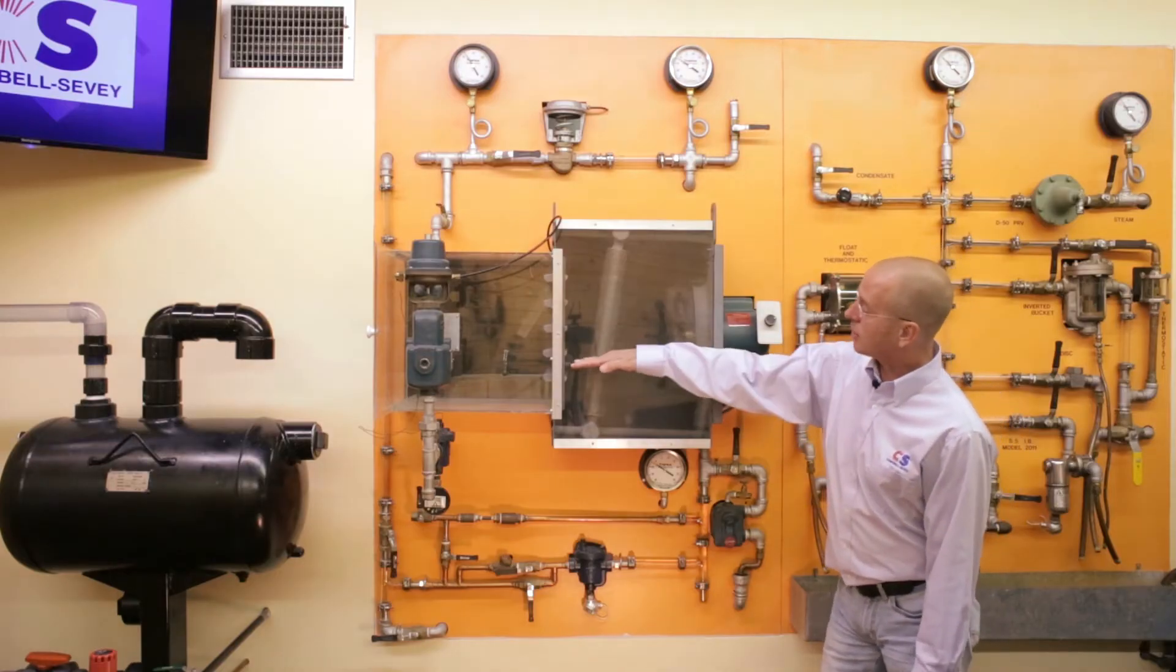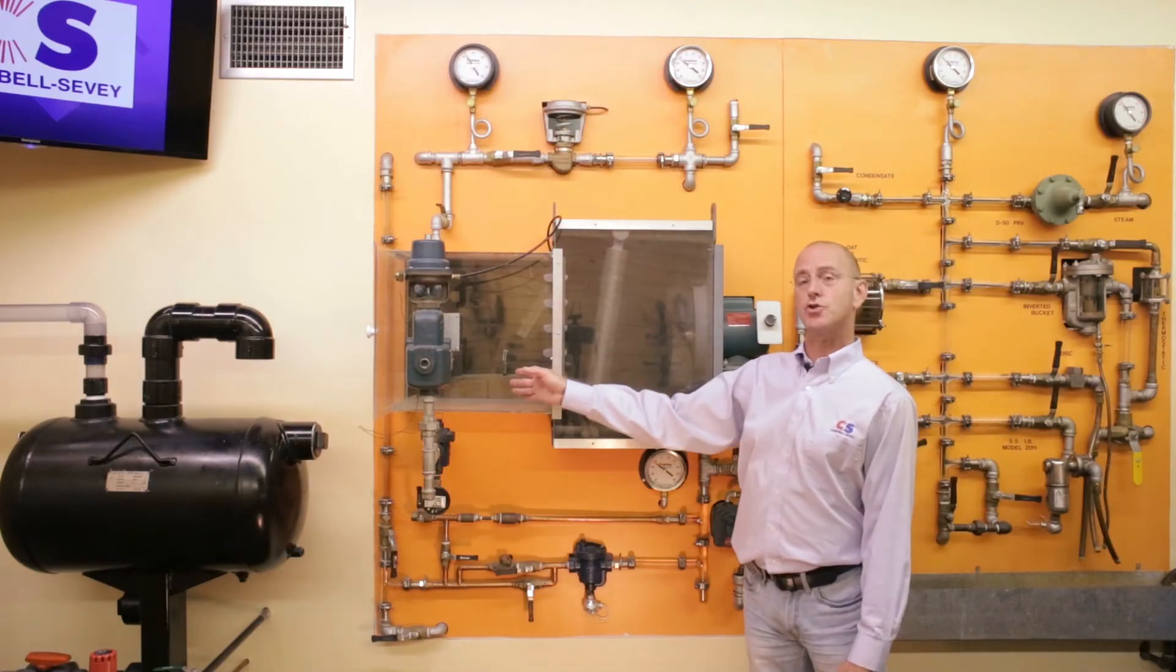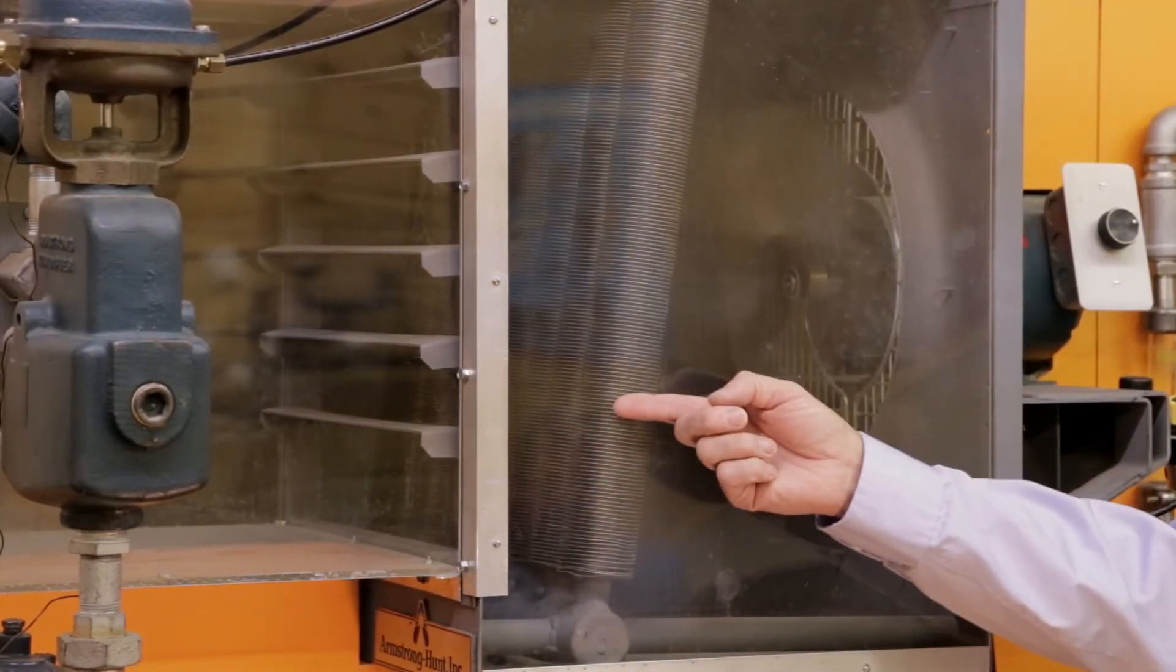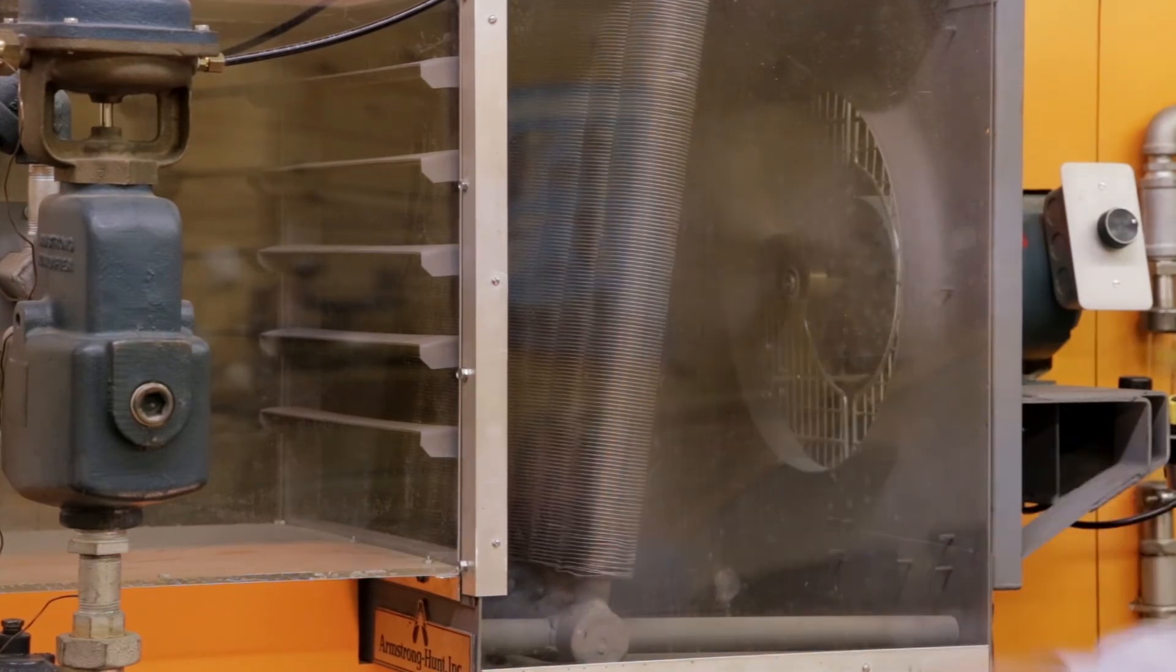If we've got condensate laying in our coil, that either leads to temperature control issues downstream, or we can have water hammer, or we can have the potential for freezing, or long term we'll corrode our coil.